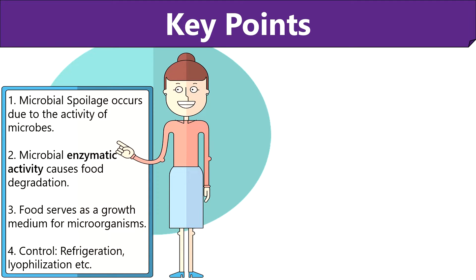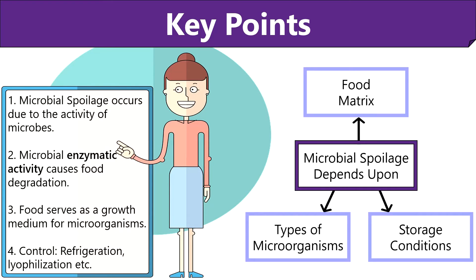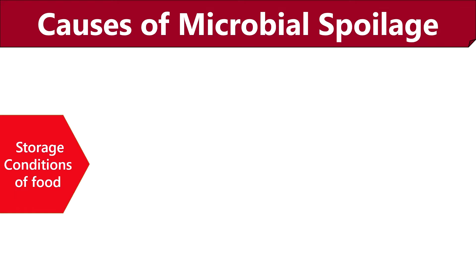Microbial food spoilage can be controlled by techniques like refrigeration, lyophilization and by adding preservatives. Microbial spoilage depends upon factors like food matrix — meaning the physical and chemical properties of food — the type of microorganisms, and the food storage conditions. Now we will study the causes of microbial food spoilage.